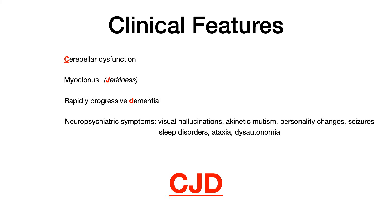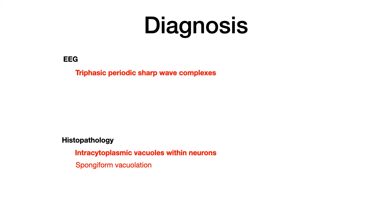On your exam, the test writer won't tell you it's rapidly progressive dementia outright. They'll give you a 60-ish year old patient with dementia symptoms that started one week ago. You need to put two and two together to identify it as rapidly progressive. Look for buzzwords like myoclonus and ataxia — don't count on the vignette spelling it out for you.